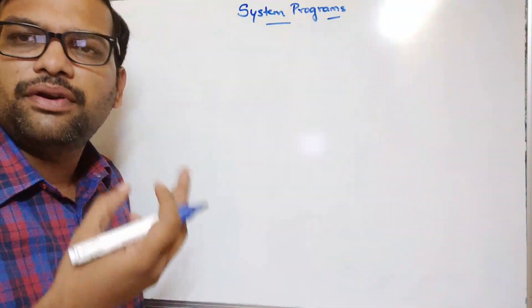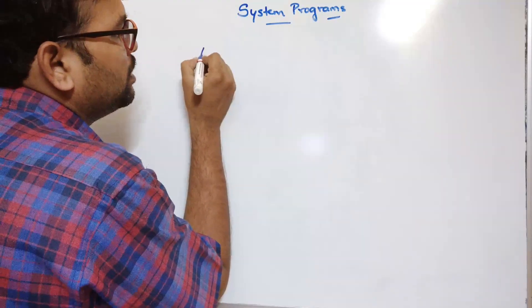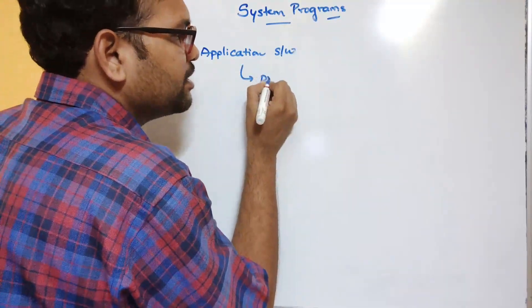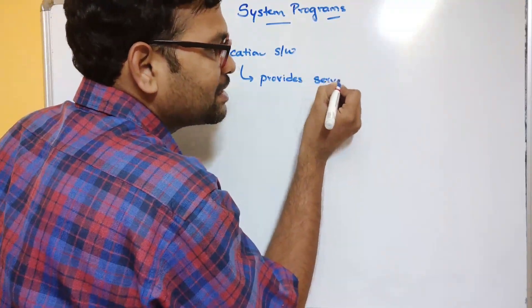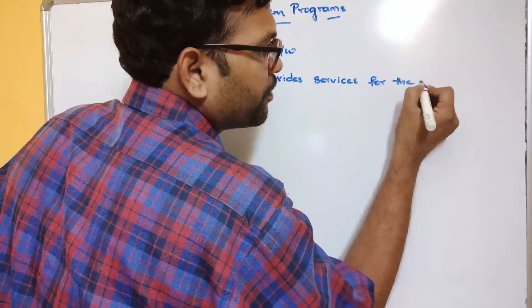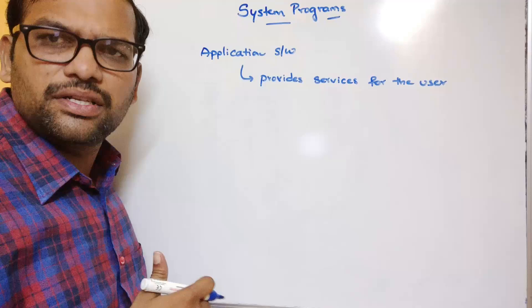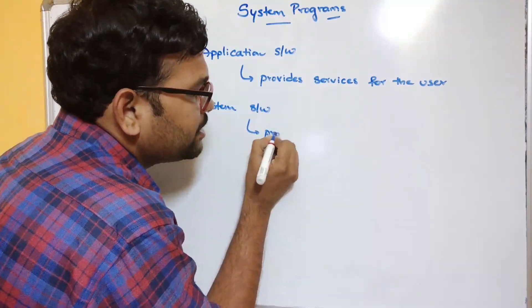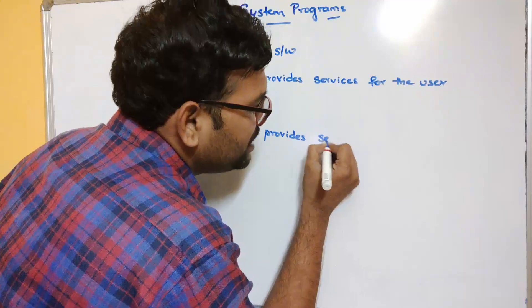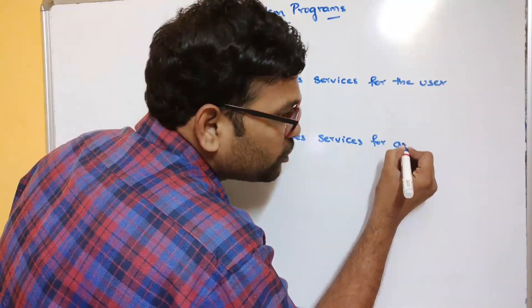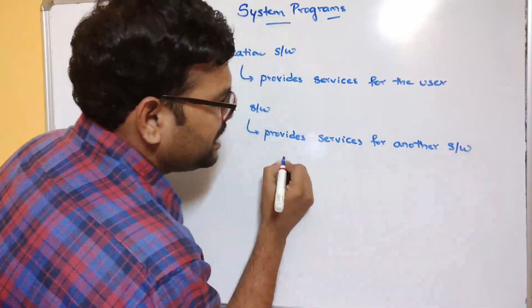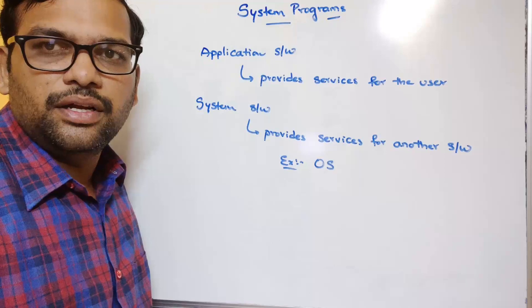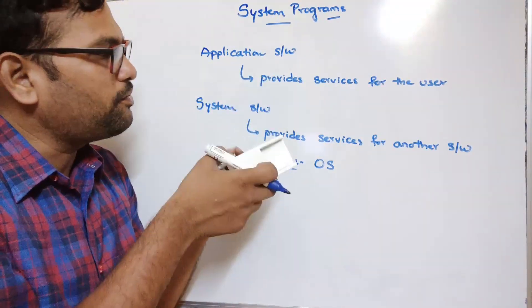System programs are somewhat different from application programs. Application software provides services for the user, while system software provides services for another software. The best example of system software is an operating system, because the operating system provides different services for different software. This is the slight difference between application software and system software.